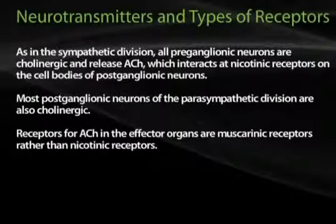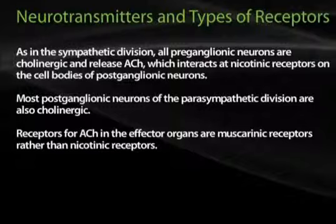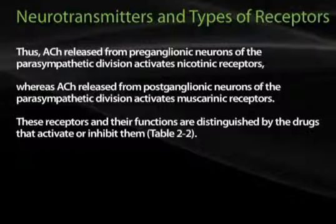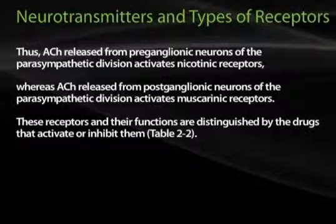As in the sympathetic division, all preganglionic neurons are cholinergic and release acetylcholine, which interacts at nicotinic receptors on the cell bodies of postganglionic neurons. Most postganglionic neurons of the parasympathetic division are also cholinergic. Receptors for acetylcholine in the effector organs are muscarinic receptors rather than nicotinic receptors. Thus, acetylcholine released from preganglionic neurons activates nicotinic receptors, whereas acetylcholine released from postganglionic neurons activates muscarinic receptors. These receptors and their functions are shown in Table 2-2, also found on page 53.